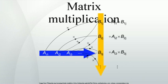Scalar multiplication. The simplest form of multiplication associated with matrices is scalar multiplication. The left scalar multiplication of a matrix A with a scalar L gives another matrix L of the same size as A. Similarly, the right scalar multiplication of a matrix A with a scalar L is defined explicitly. When the underlying ring is commutative, e.g. the real or complex number field, these two multiplications are the same, and are simply called scalar multiplication.